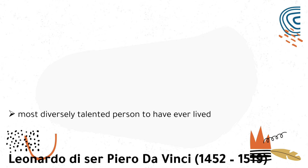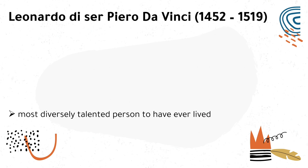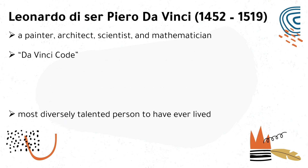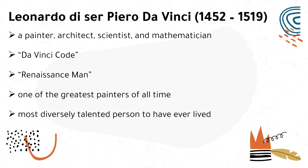Next is Leonardo di Sir Piero da Vinci. Leonardo da Vinci was a painter, architect, scientist, and mathematician, popularized in present times through the novel and movie Da Vinci Code. He is known as the Renaissance Man because of his intellect, interest, talent, and his expression of humanist and classical values. He was considered one of the greatest painters of all time, and perhaps the most diversely talented person to have ever lived.